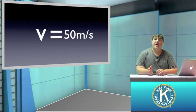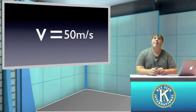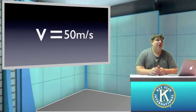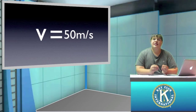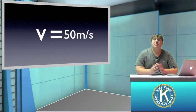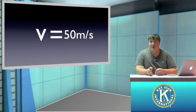Down where the dragster ended was a positive direction, and behind the dragster was a negative direction. So really we should say velocity is equal to positive 50 meters per second, because the dragster was moving away from the origin in a positive direction.